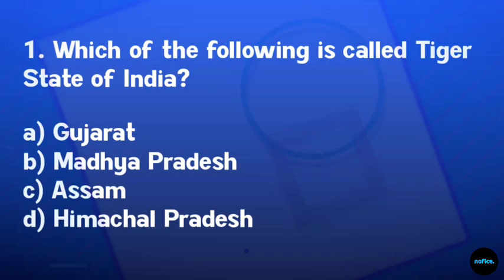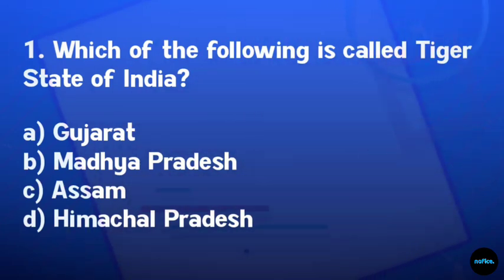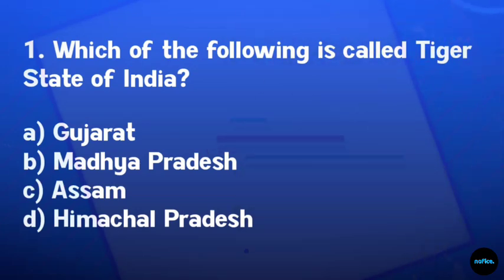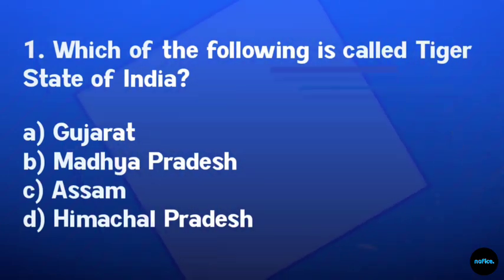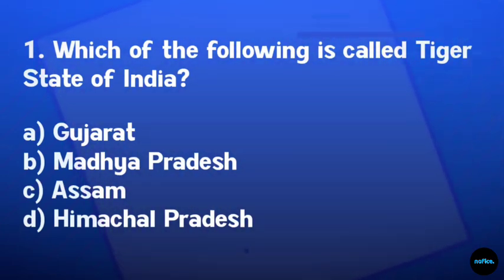Which of the following is called the Tiger State of India? Option A: Gujarat. Option B: Madhya Pradesh. Option C: Assam. Option D: Himachal Pradesh.